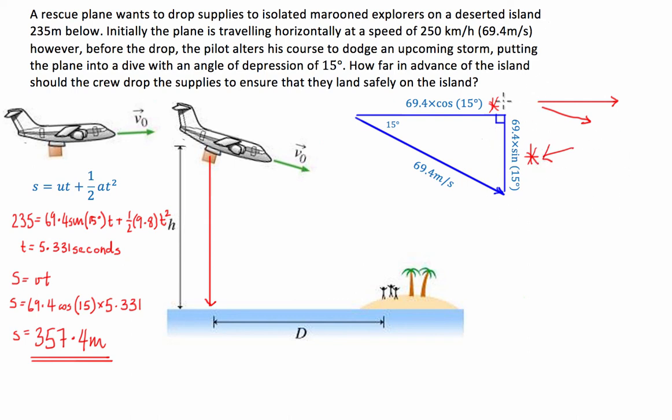So as a result, we're going to add a downwards component of the velocity, and what that's going to do is it's going to shorten the time that it takes for the package to hit the ground. As a result, we're going to have to probably throw the package a little bit later.